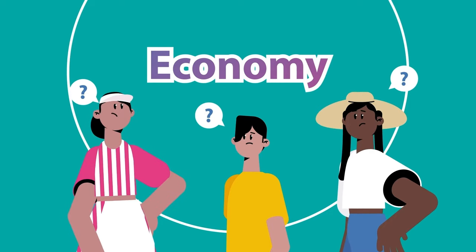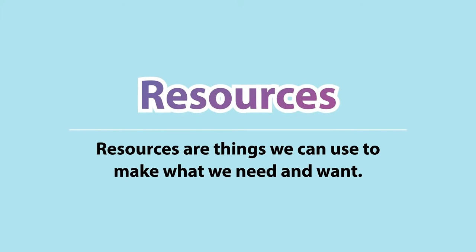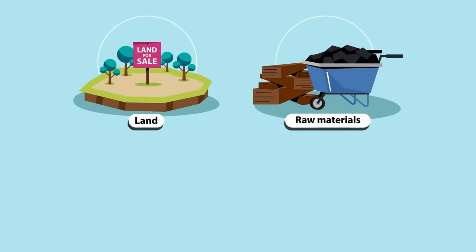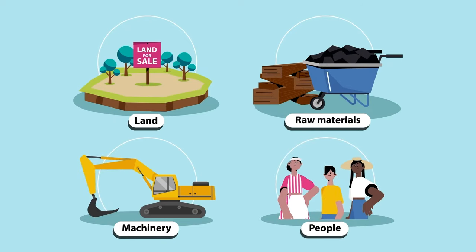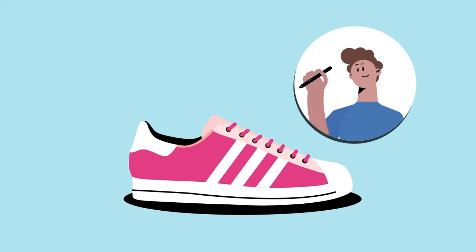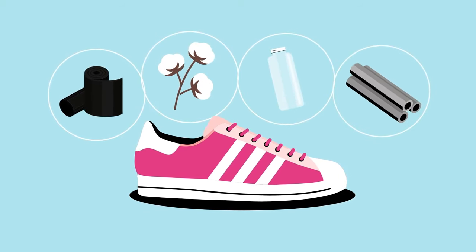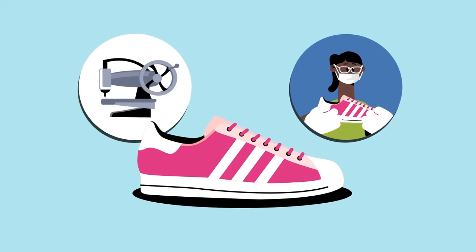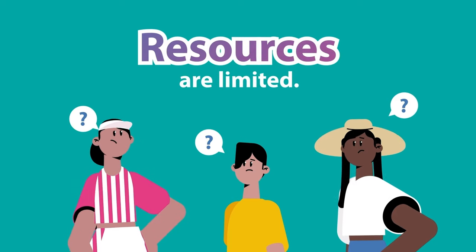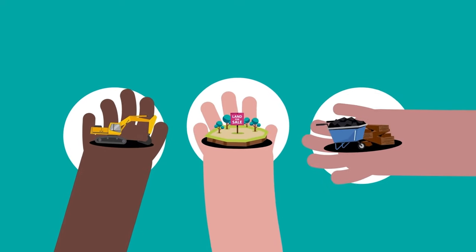To answer that, the first thing we need to think about is resources. Resources are things we can use to make what we need and want. They can include land, raw materials like wood or iron ore, machinery, and people. Let's think about sneakers. Sneakers don't grow on trees. We need someone to have a design idea, then raw materials like rubber, cotton, plastic, and metal, and people to put them together or to build machines that do. But there's a problem — resources are limited. We can't have all of the things we want all of the time. We have to make decisions about how our limited resources are used.